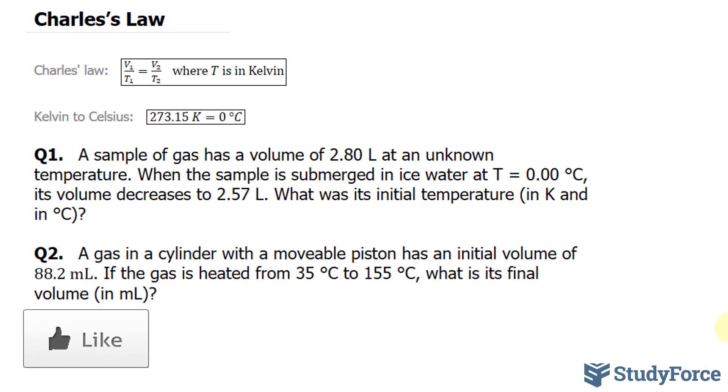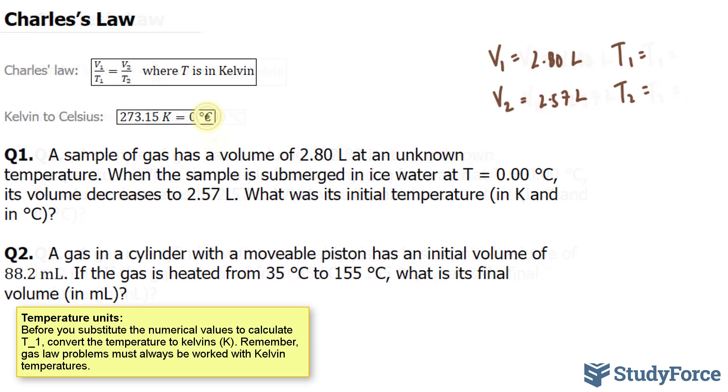We're told the original volume, which we'll denote as V1, is equal to 2.80 liters. We're also told that its final volume, which I'll denote as V2, is 2.57 liters. Given that they're asking for the initial temperature, which is T1, we've been given T2 as 0.00 Celsius. We need to convert this into Kelvin. So, 0 Celsius is actually equal to 273.15 Kelvin. I'll write down 273.15.